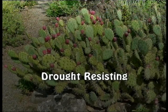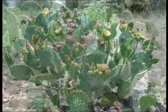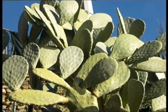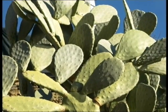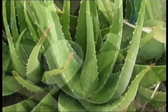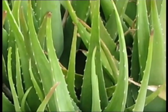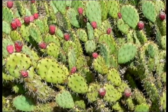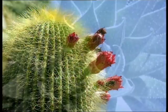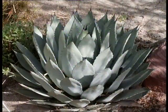Drought-resisting plants are succulent, with thick and fleshy stems and leaves. They are water-holders, storing plenty of water during the rainy season in their stems, which become modified to phyllo-clades. Examples are Opuntia and cactus; in Bryophyllum, Aloe, and Agave, the leaves are fleshy.